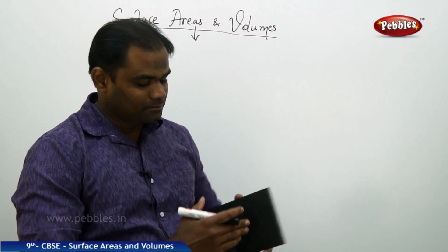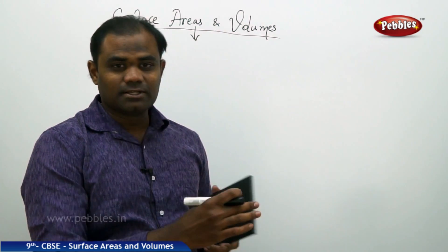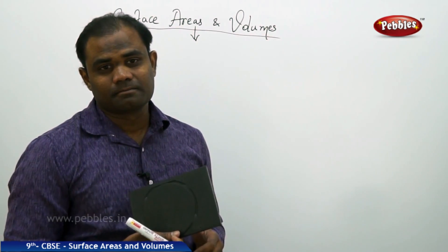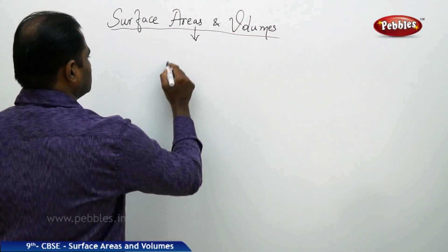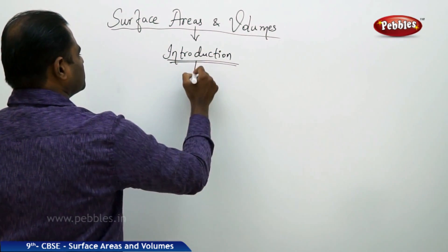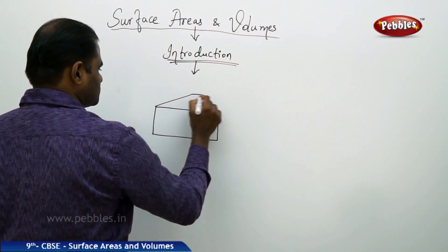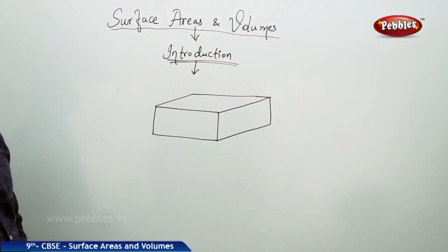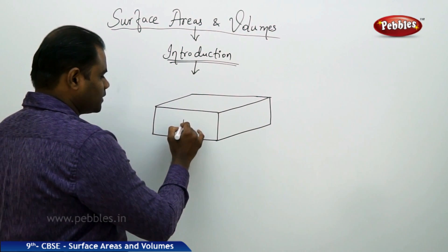It has area here, and here, and here, and here, and here, and here — so there are totally six different faces for this shape, which is called a cuboid in mathematics. Let's draw a cuboid and understand the concept. Here is the cuboid, assumed to be seen from this angle.